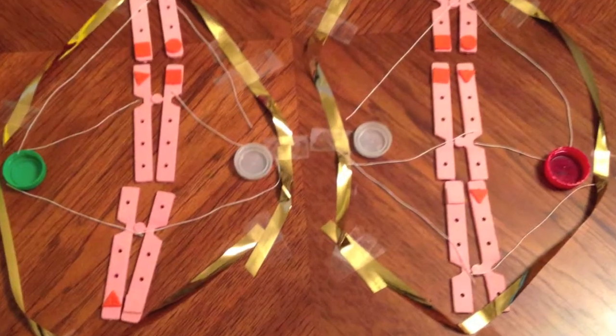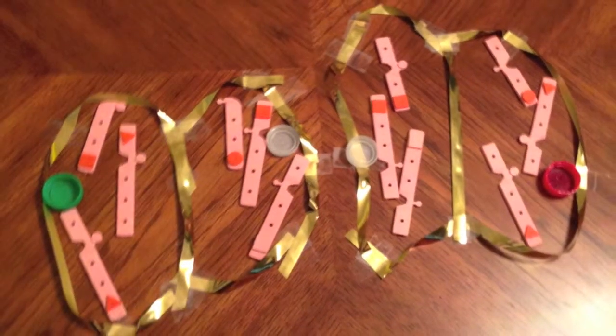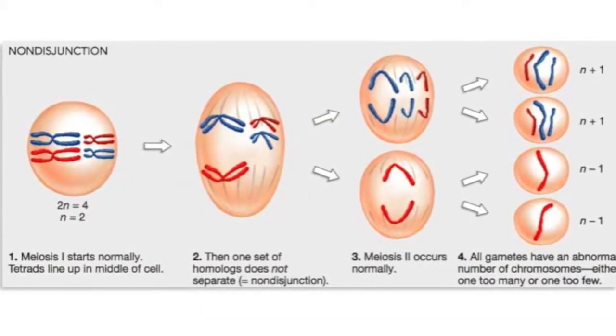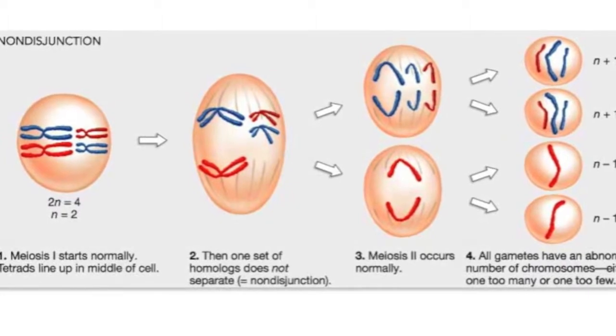With independent assortment alone, there is a chance of eight different possibilities of gametes to be produced. This number depends on the formula 2 to the power of the number of chromosome pairs. Nondisjunction is an error that occurs in meiosis. It can be when chromosomes fail to separate during anaphase, so more chromosomes can end up in one cell than another.